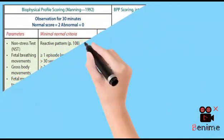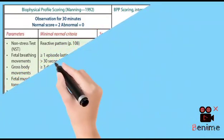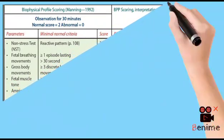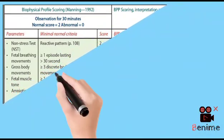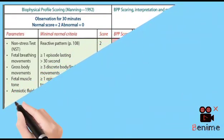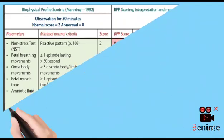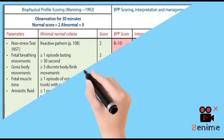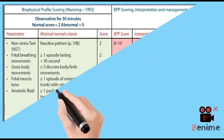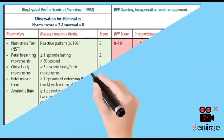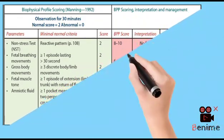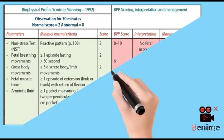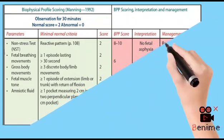5. Fetal Heart Rate Monitoring — Non-Stress Test (NST): The fetal heart rate is monitored using a Doppler device or an electronic fetal heart rate monitor. The test measures the heart rate response of the fetus to its own movements. Each parameter is assigned a score of either 0 or 2 points, depending on whether it is absent or present, respectively.